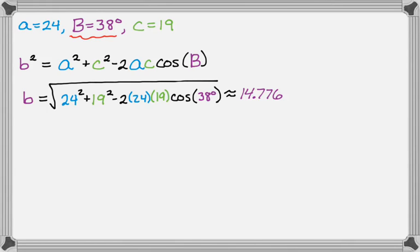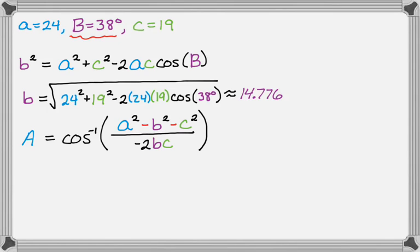So now that I know that, I actually now know all three sides, so I can use the law of cosines to find an angle. I'm going to use it to find angle A. So A is the inverse cosine of a squared minus b squared minus c squared over negative 2bc. And if we fill in what we know.